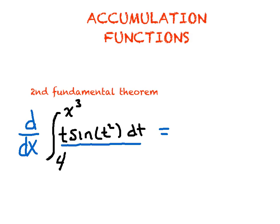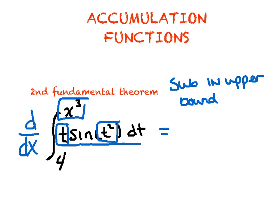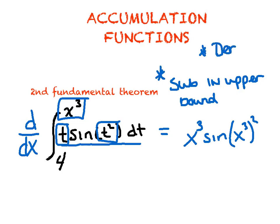We said we're going to do two things. We're going to substitute in the upper bound — replace every t with x cubed, the upper bound. So that gives x cubed sine of x cubed squared. The other thing is to take the derivative of the upper bound. The derivative of x cubed is 3x squared, so we multiply the answer by 3x squared.